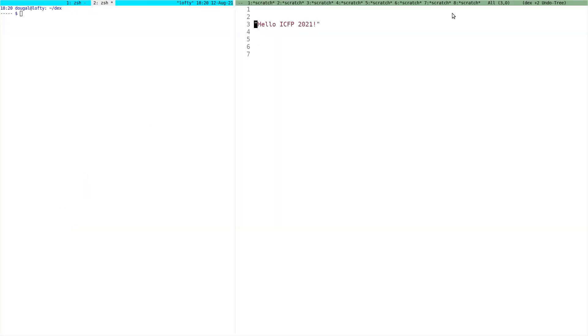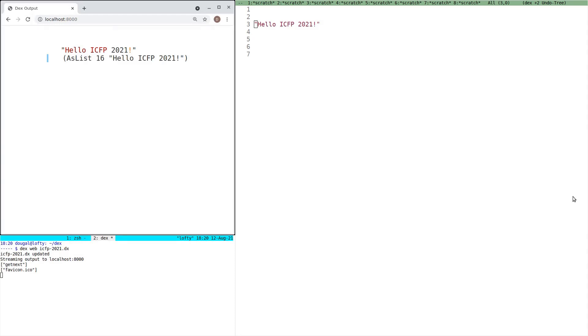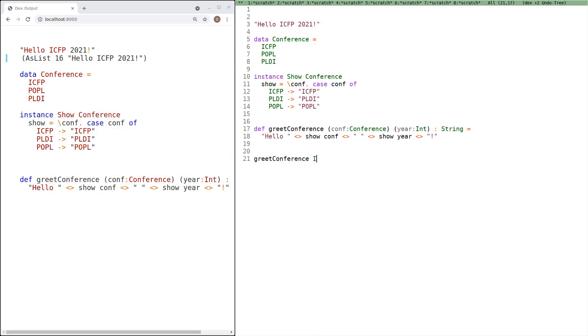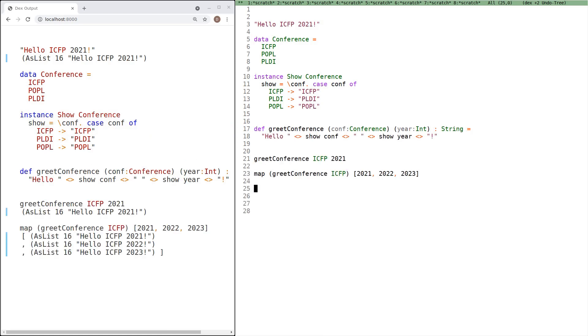I think the easiest thing to do now is just to show you what it looks like so far. So on the right, I just have emacs, and on the left, just going to start up the DEX notebook. And what this is going to do is it's going to watch the file for changes and run it every time it changes. To give you a flavor of the syntax, let's just abstract this into a function.